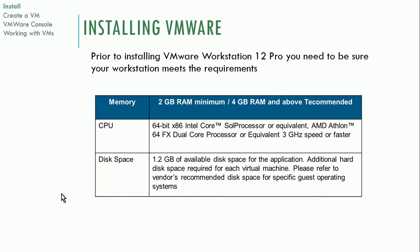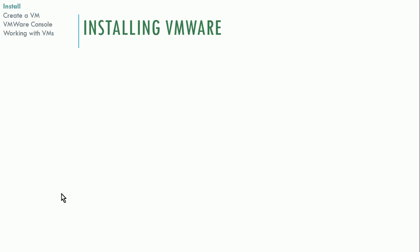You need a 64-bit x86 Intel processor or equivalent, such as the AMD Athlon. You have to have certain types of processors. The minimum is 64-bit, though there are versions of VMware that also support 32-bit — but you'll only be able to use a 32-bit guest in that case.